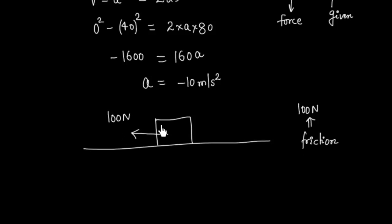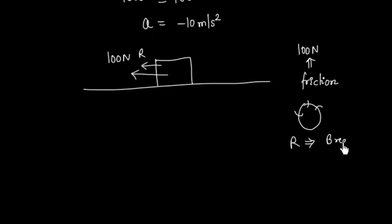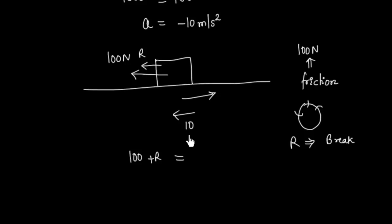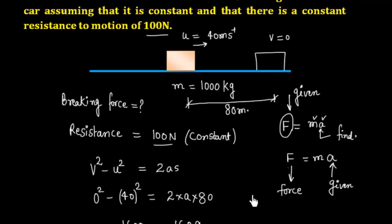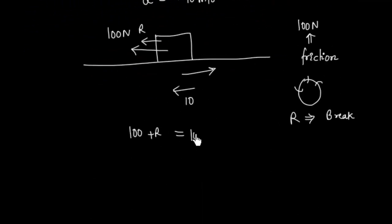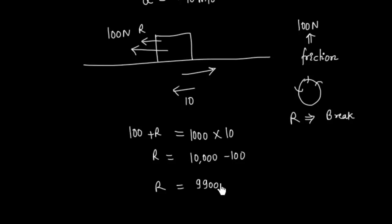Applying Newton's Second Law in the direction of deceleration: 100 + R = mass × acceleration = 1000 × 10 = 10,000 N. Therefore R = 10,000 - 100 = 9,900 N. This is the braking force applied by the brakes.